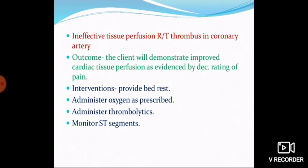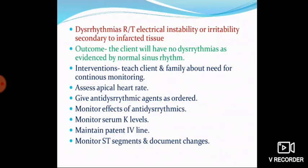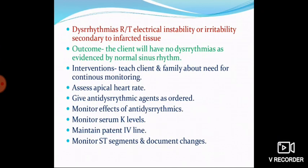Second nursing diagnosis: ineffective tissue perfusion related to thrombus in coronary artery. Outcome: the client will demonstrate improved cardiac tissue perfusion as evidenced by reduced pain rating. Interventions: provide bed rest, administer oxygen and prescribed medications, administer thrombolytic agents, and monitor ST segment on ECG.